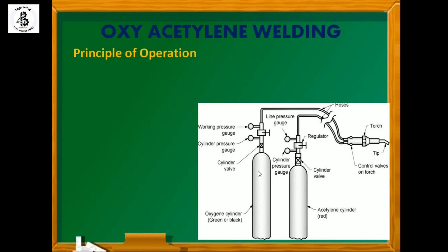There is a cylinder valve for the oxygen cylinder, with two different kinds of gauges attached. One is the cylinder pressure gauge, which indicates the inside pressure of the oxygen cylinder. The other is the working pressure gauge, which indicates what pressure is being utilized for the welding, so you can easily control the working pressure.